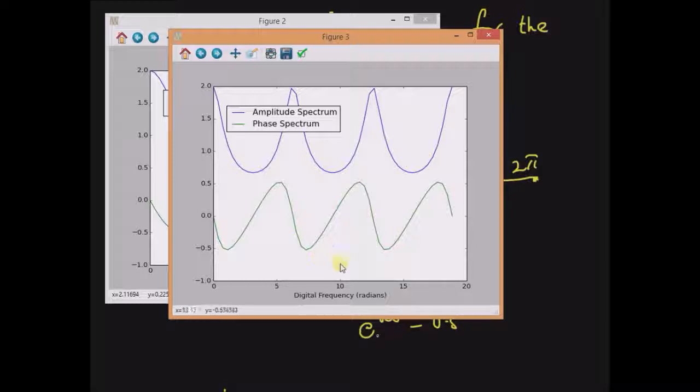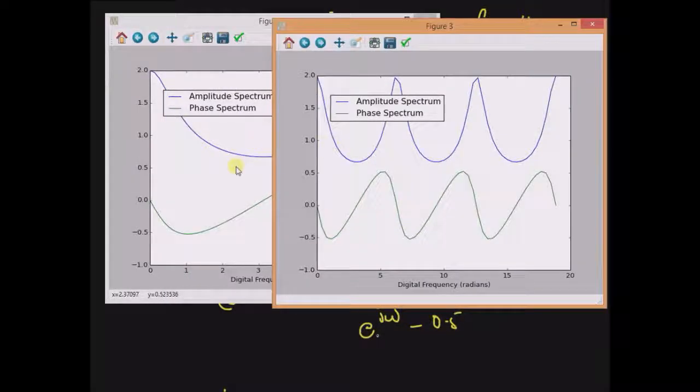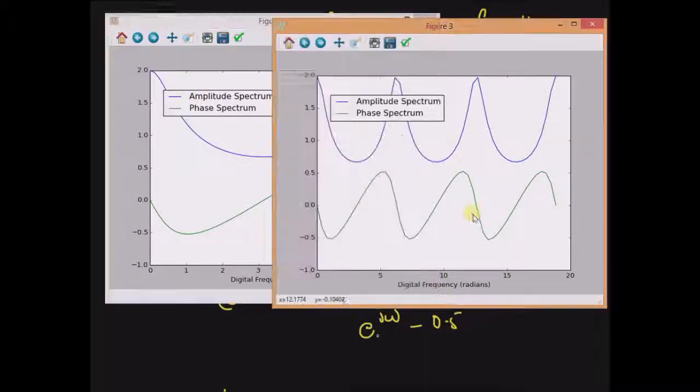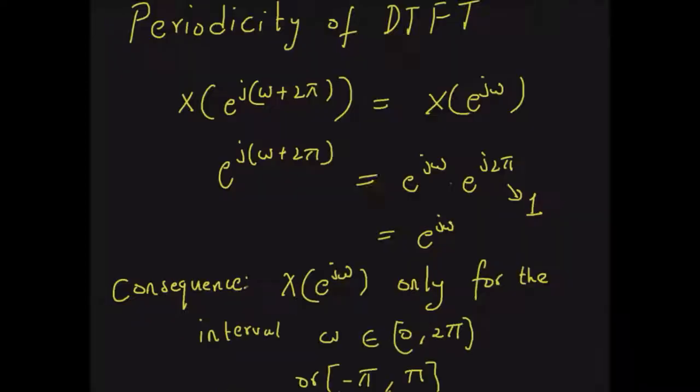It repeats after every 2π radian. We can also verify the fact by comparing these two figures, and this shape basically repeats in this plot. Thus the DTFT is a complex function with a period equal to 2π.